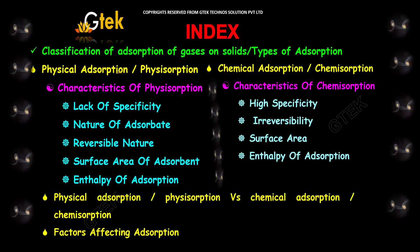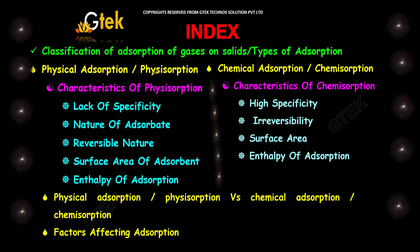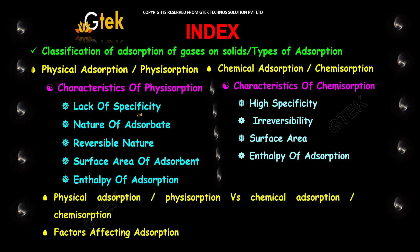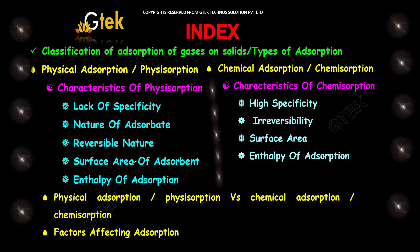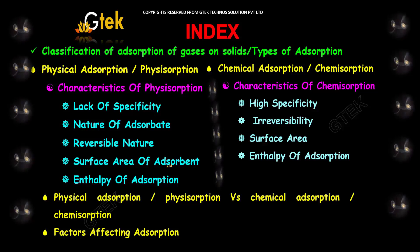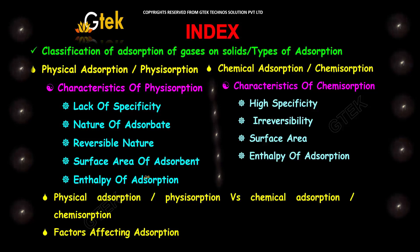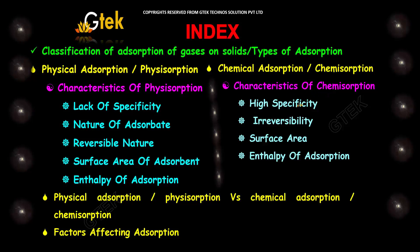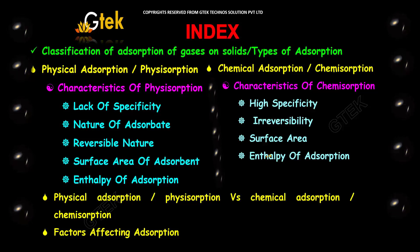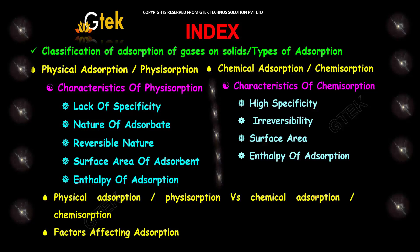We will cover physical adsorption, or physisorption, and its characteristics: lack of specificity, nature of adsorbent, reversible nature, surface area of adsorbent, and enthalpy of adsorption. Apart from these, the characteristics of chemisorption include high specificity, irreversibility, surface area, and enthalpy of adsorption.